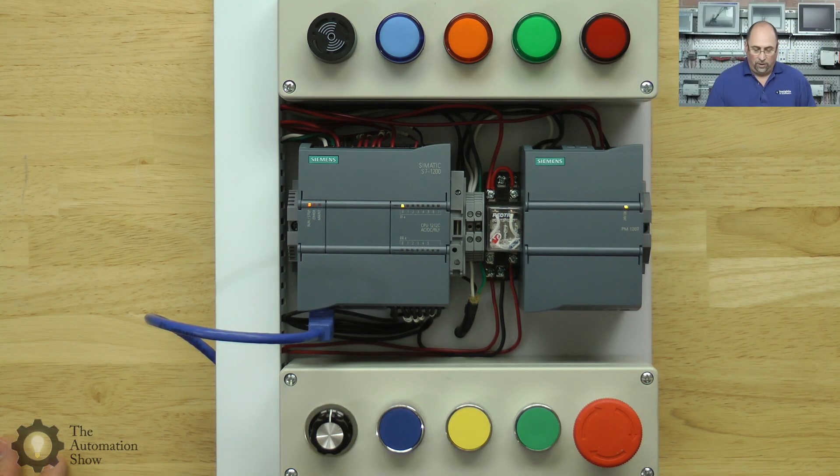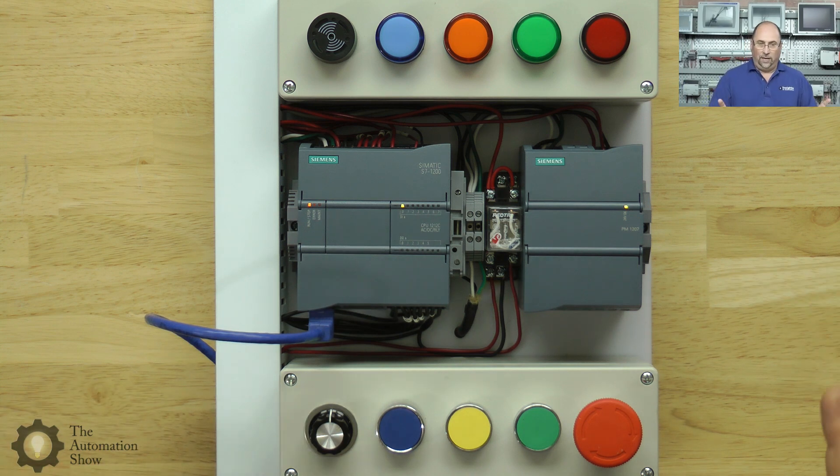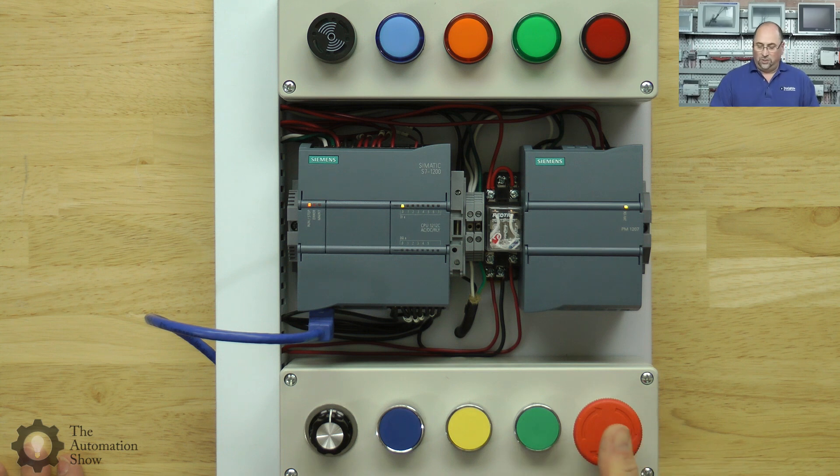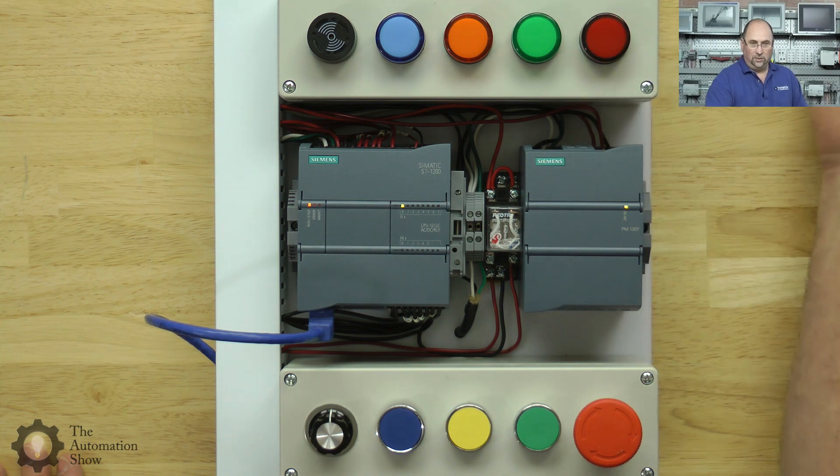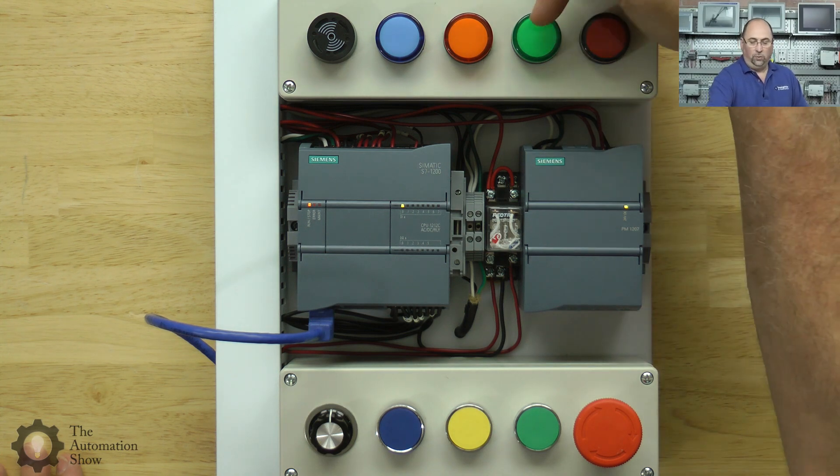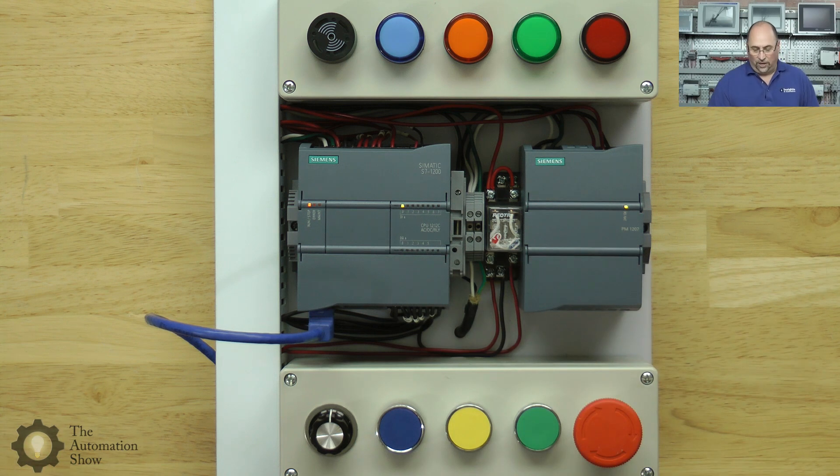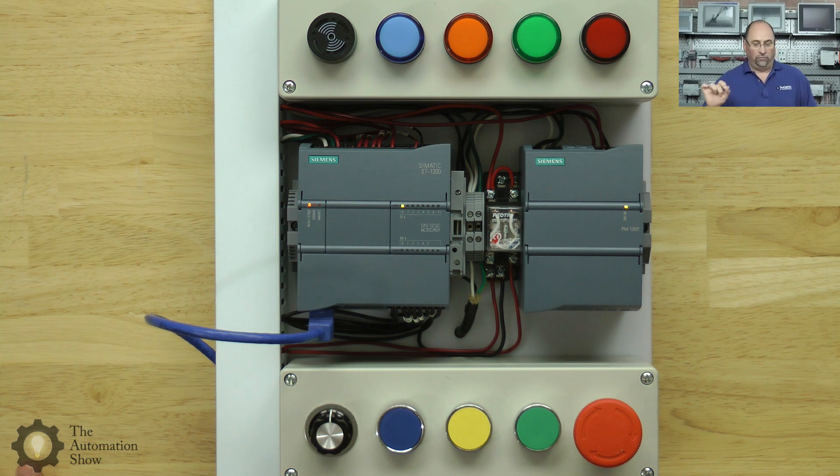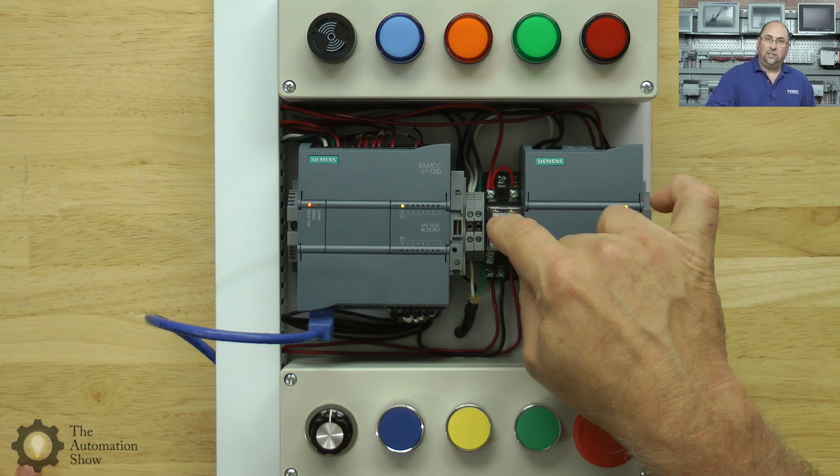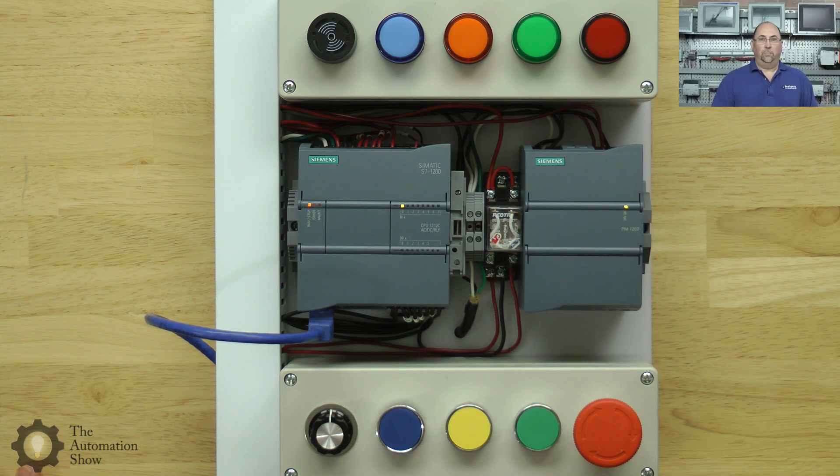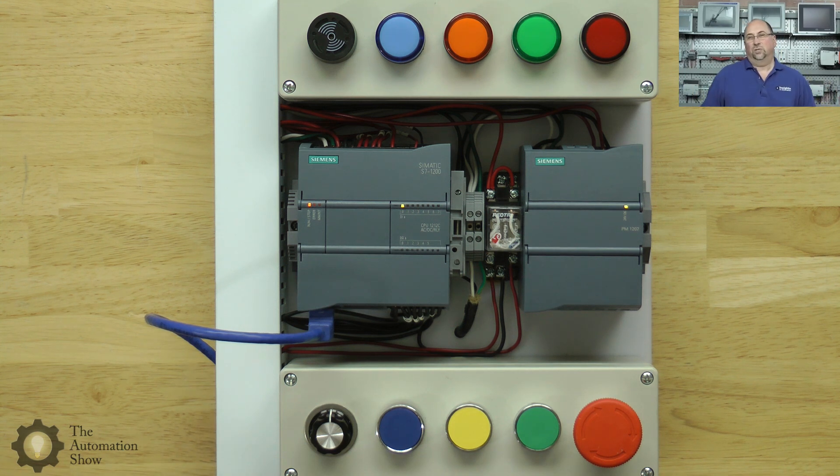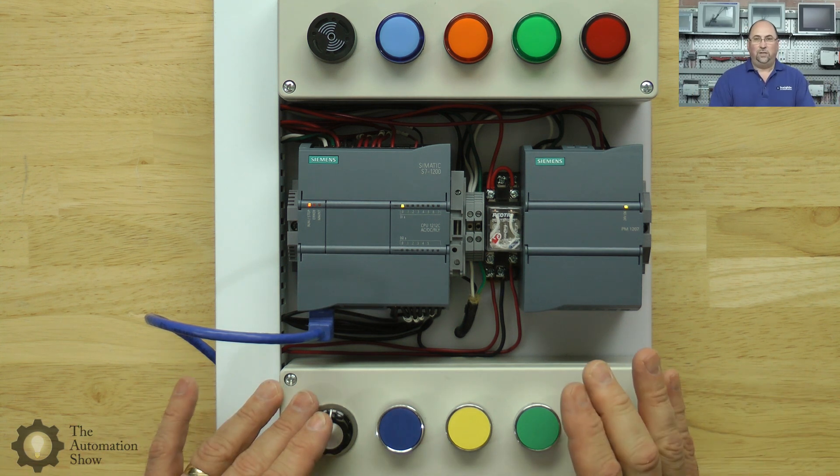I ripped out one of my micrologics and put the Siemens into this demo. And I wired in the stop and the start into inputs 0 and 1. I also wired in the red and green LEDs into outputs 0 and 1. And then my relay here is what I'm using for my motor starter. The coil is wired into output number five and the contacts are wired into input number five to simulate the auxiliary contacts on a motor starter.